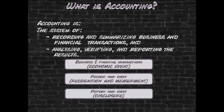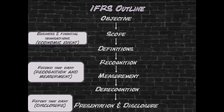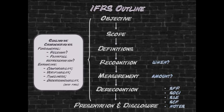Before considering IAS 16, let us briefly reflect on the accounting process. This process commences with an economic event which is then recorded and reported on. This process is evident in the typical structure of an IFRS. A typical IFRS will include principles and rules to guide preparers as to when to recognize the event and at what amount.